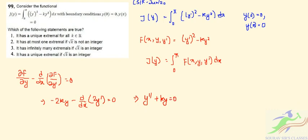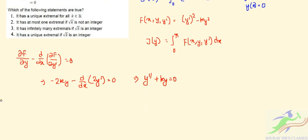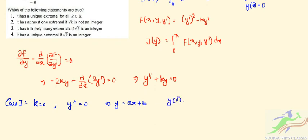Case 1: k = 0. Then y″ = 0, so y = ax + b. Applying the boundary conditions y(0) = 0 and y(π) = 0 gives a = 0 and b = 0, so y(x) = 0, which is only the trivial solution.